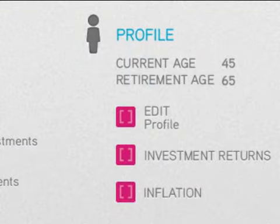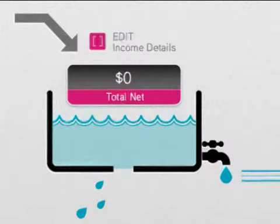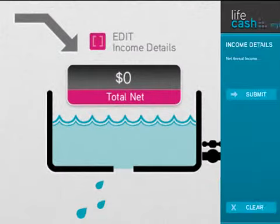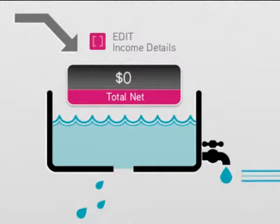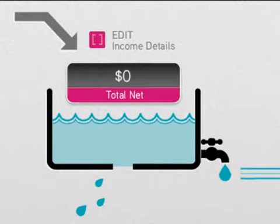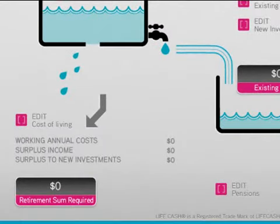With your profile set, move over to the income tank in the top left of the screen. Enter your total net household income — that is the annual income less taxes. From here, move down to the costs of living, which is your annual expenditure that regularly leaks from your income tank.